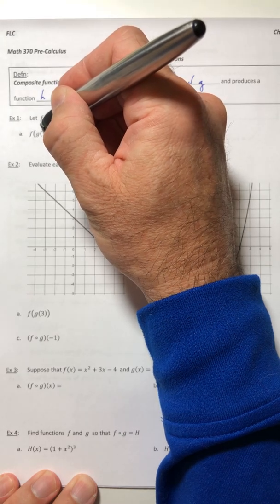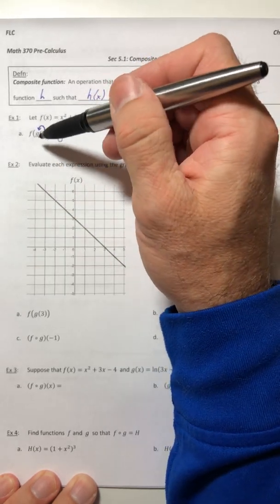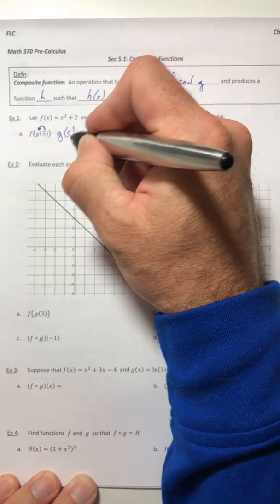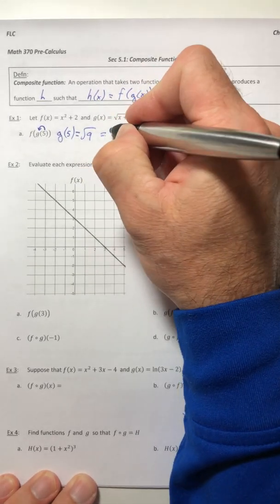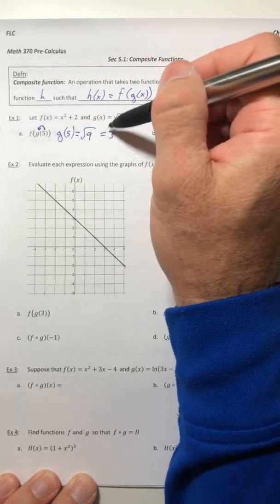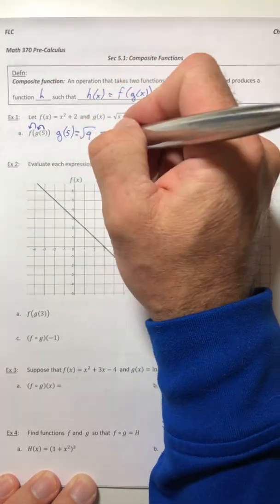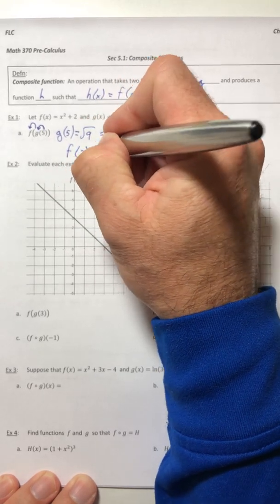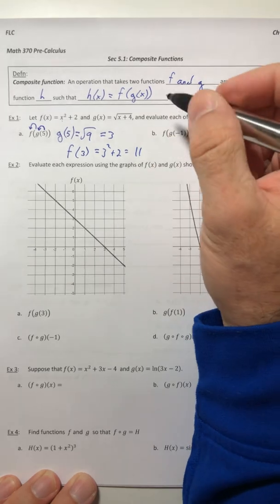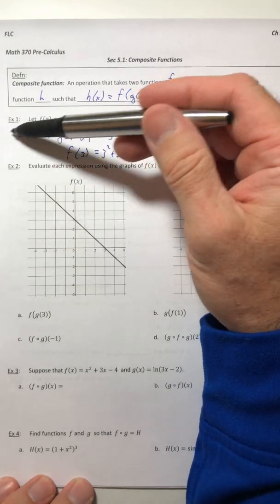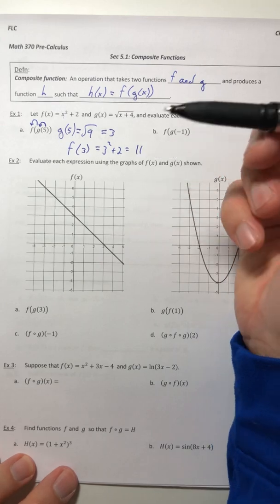So you're going to take the five and you're going to plug it into g. You're working from right to left. So the first thing is g(5), which gives you the square root of nine, or just three. Once you have that completed, you're going to take the result and plug it into the next function going to the left, which in this case is f. So f(3), stick that into your function, and you get a total of 11. If there were other functions out here, you would just repeat that process. Personally, I like this way a lot better.